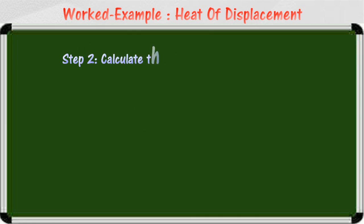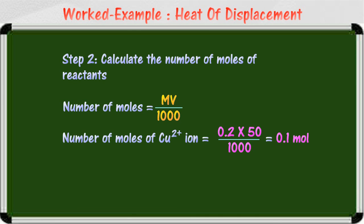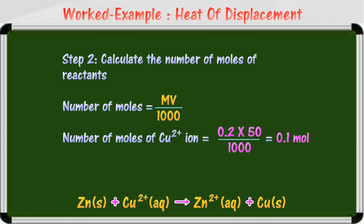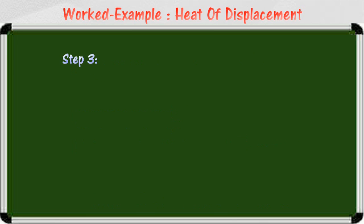The second step is to calculate the number of moles of the reactant copper(II) ion. Next, write down the ionic equation. Lastly, link the number of moles of the reactants with the heat change and calculate the heat of reaction.